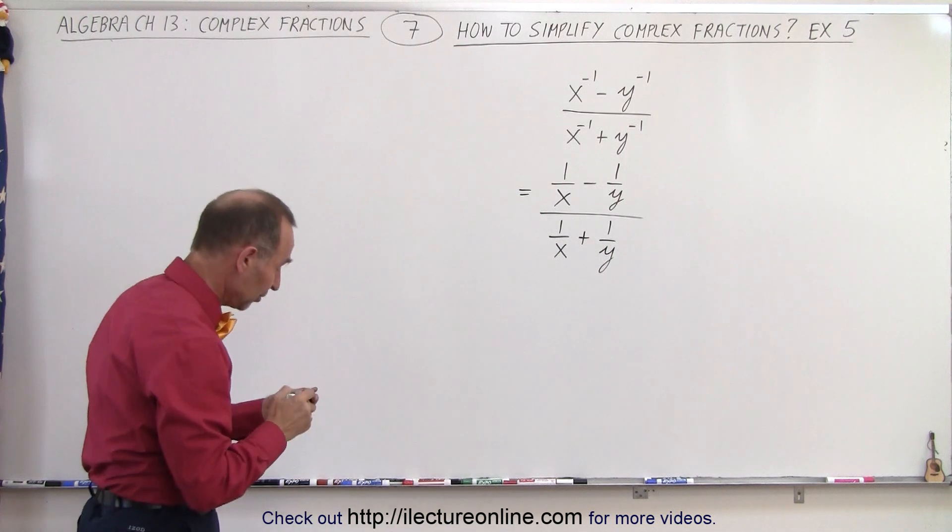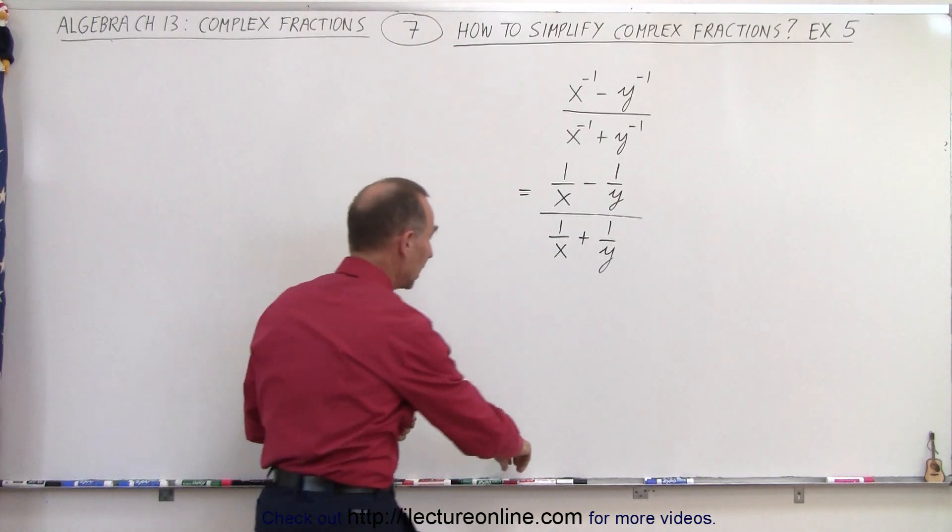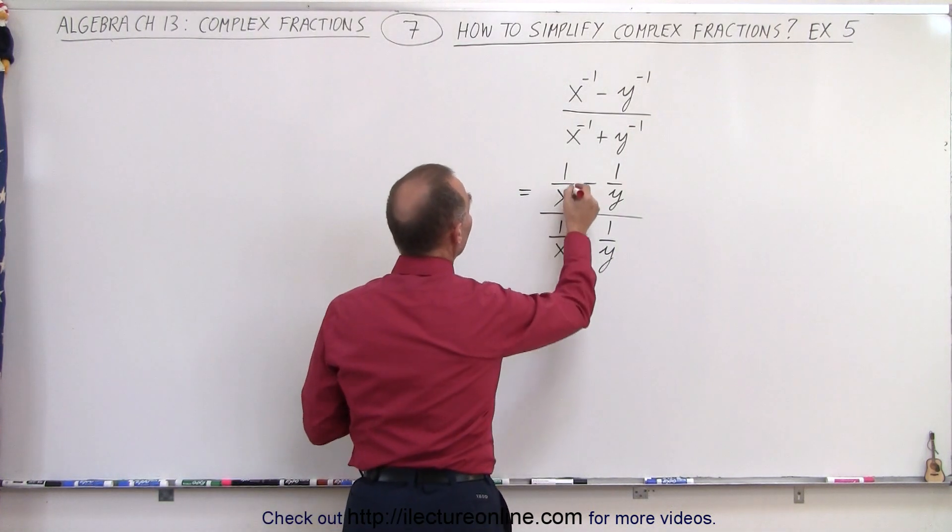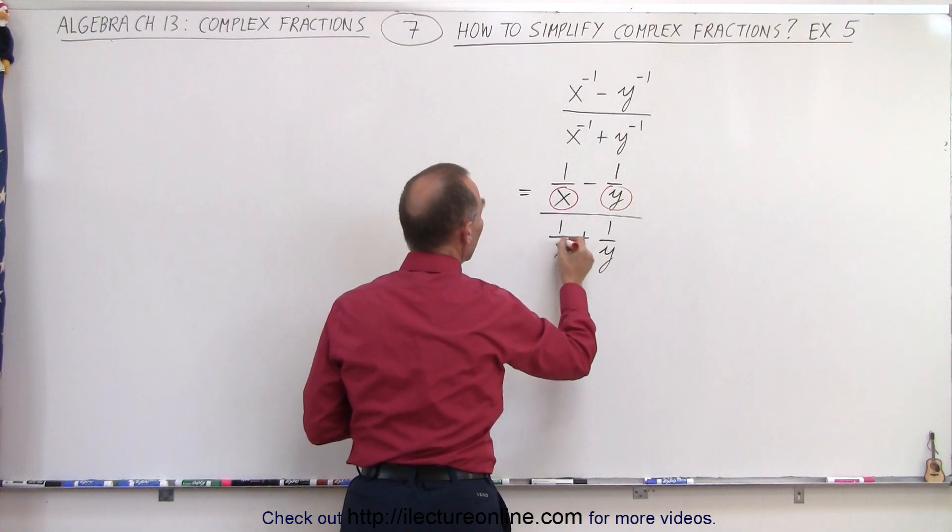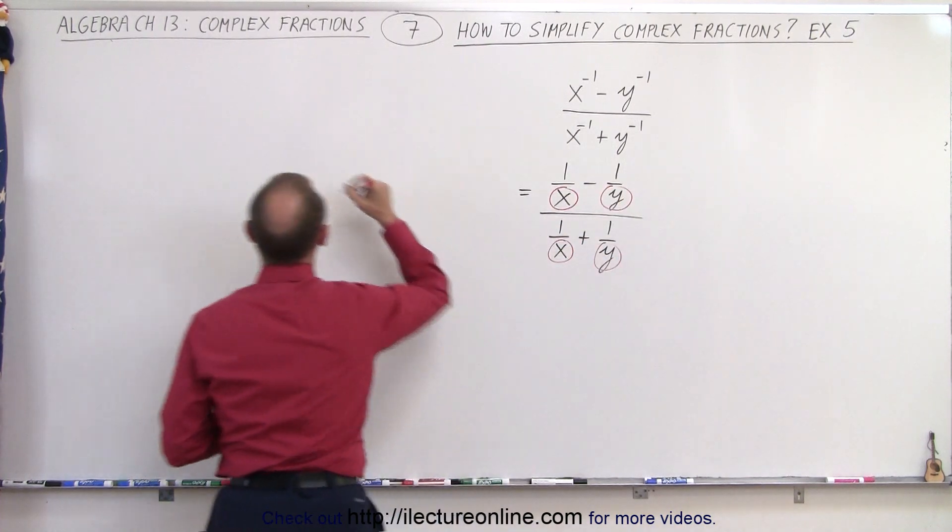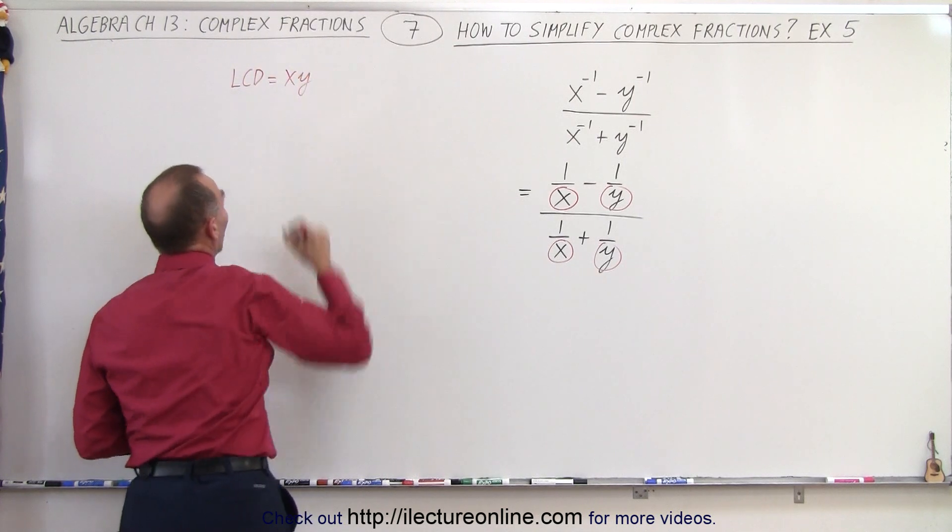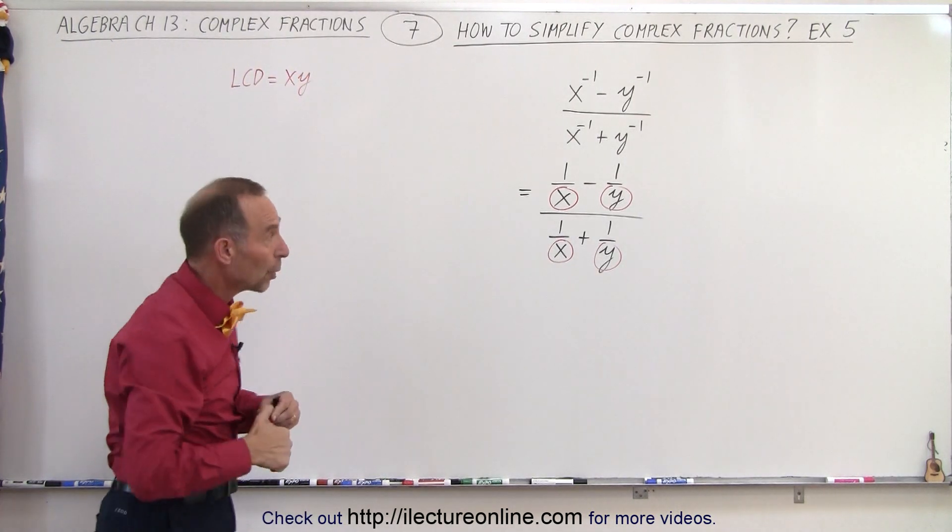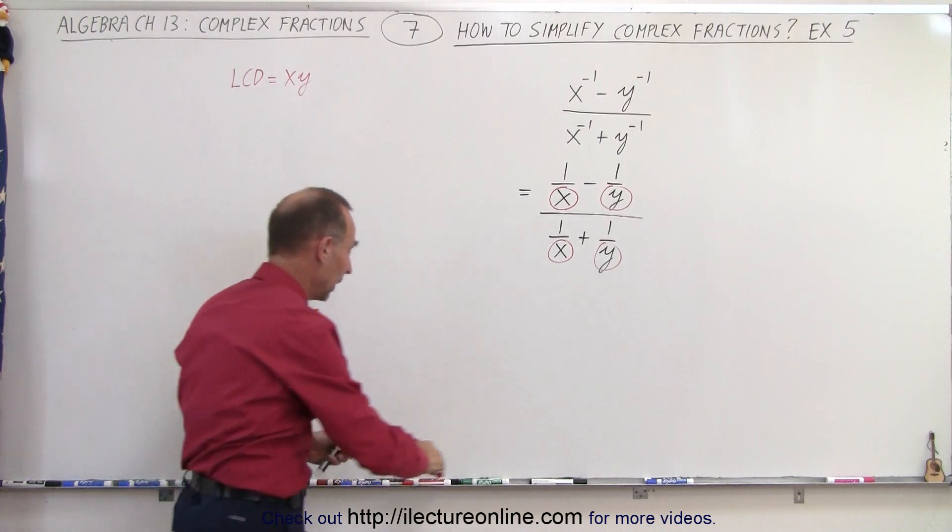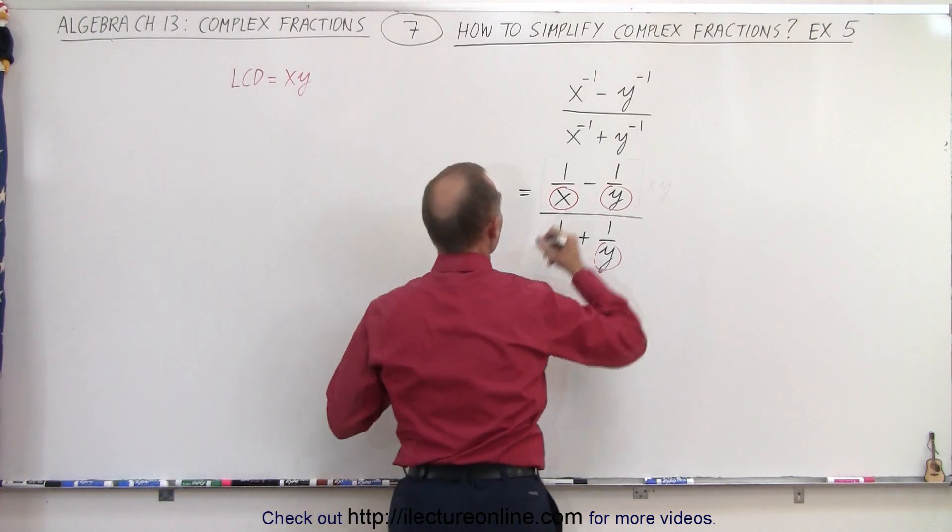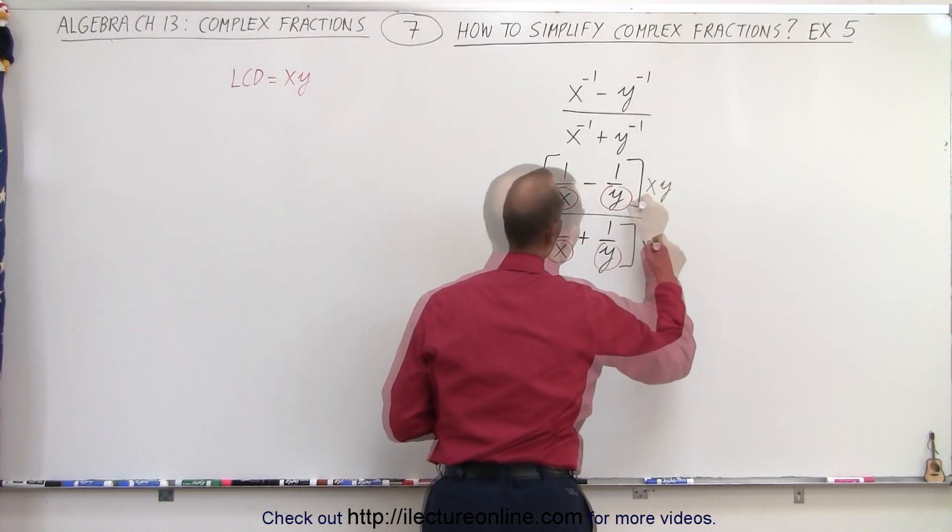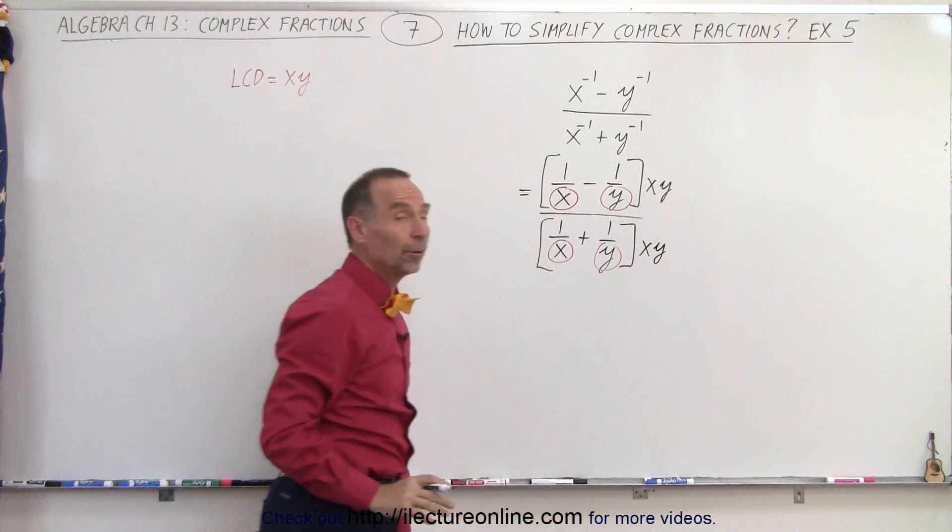And we're trying to find the lowest common denominator. Notice we have x and y as the denominators, which means the lowest common denominator is simply the product of x and y, which means we're going to multiply both the numerator and the denominator by x times y, like so.